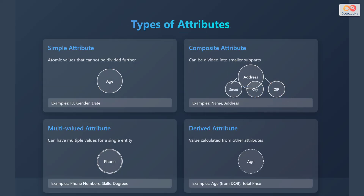Attributes come in different types. A simple attribute has atomic values that cannot be divided further, like age, ID, gender, or date. A composite attribute can be divided into smaller subparts, such as name or address.